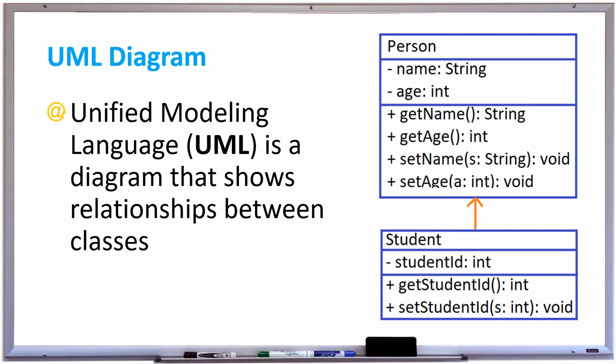Unified Modeling Language, or UML, is a diagram that shows the relationship between classes. A UML diagram basically looks like this.